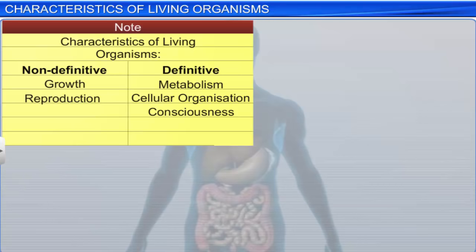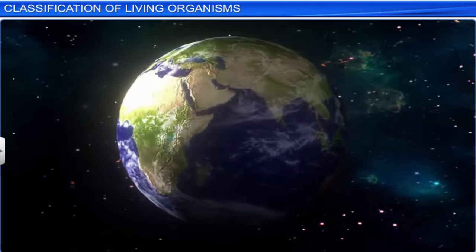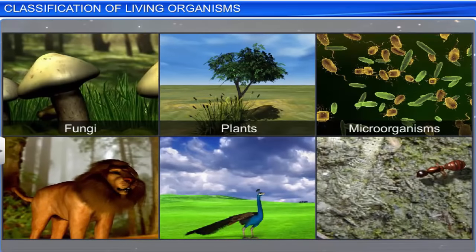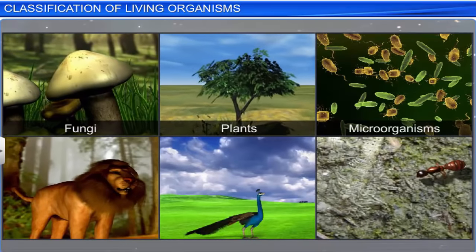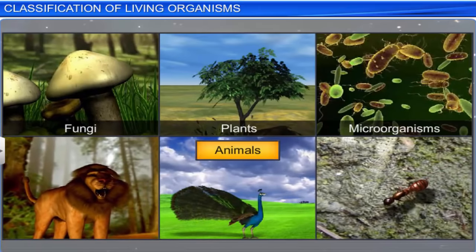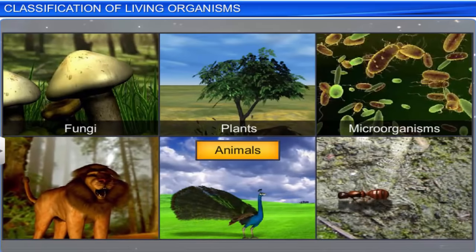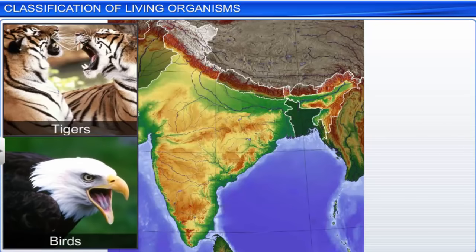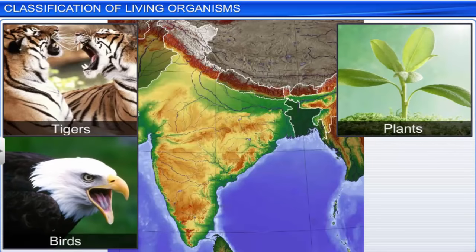Thus, we can say that metabolism, cellular organization, and consciousness are the three definitive characteristics of living organisms. Earth is a diverse planet, with millions of different types of fungi, plants, microorganisms, and animals. The range and diversity of living organisms increases as we increase the area of our observation.